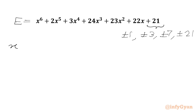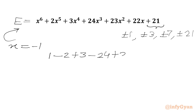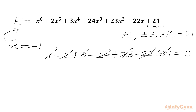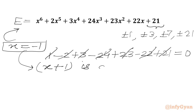I will put x equal to minus 1 into our expression e. We will get: minus 1 to the power 6 is plus 1, minus 2 plus 3, minus 24 plus 23, minus 22 plus 21. So 21 plus 1 is 22, and here we have minus 22. Also 23 plus 3 is 26, and minus 2 minus 24 is minus 26. So it is satisfying — we will say x plus 1 is one factor of expression e.